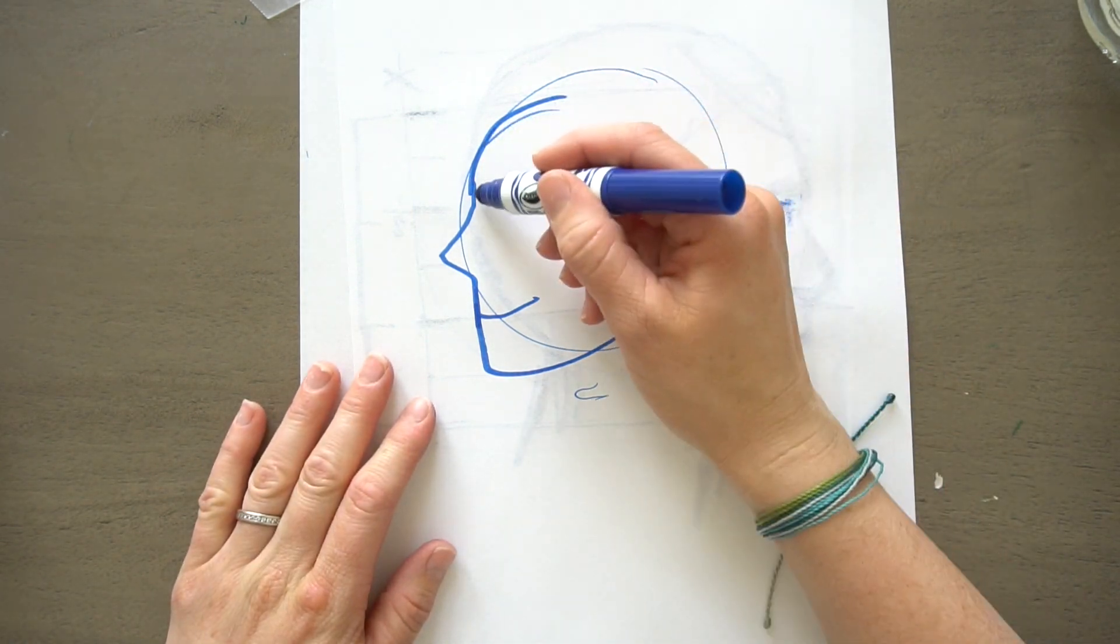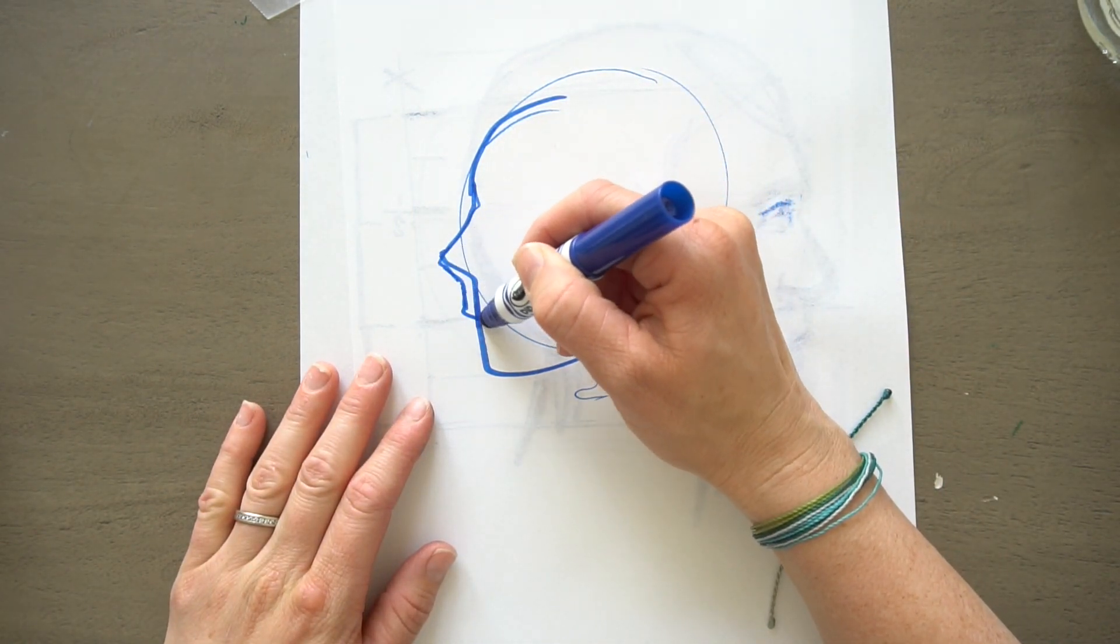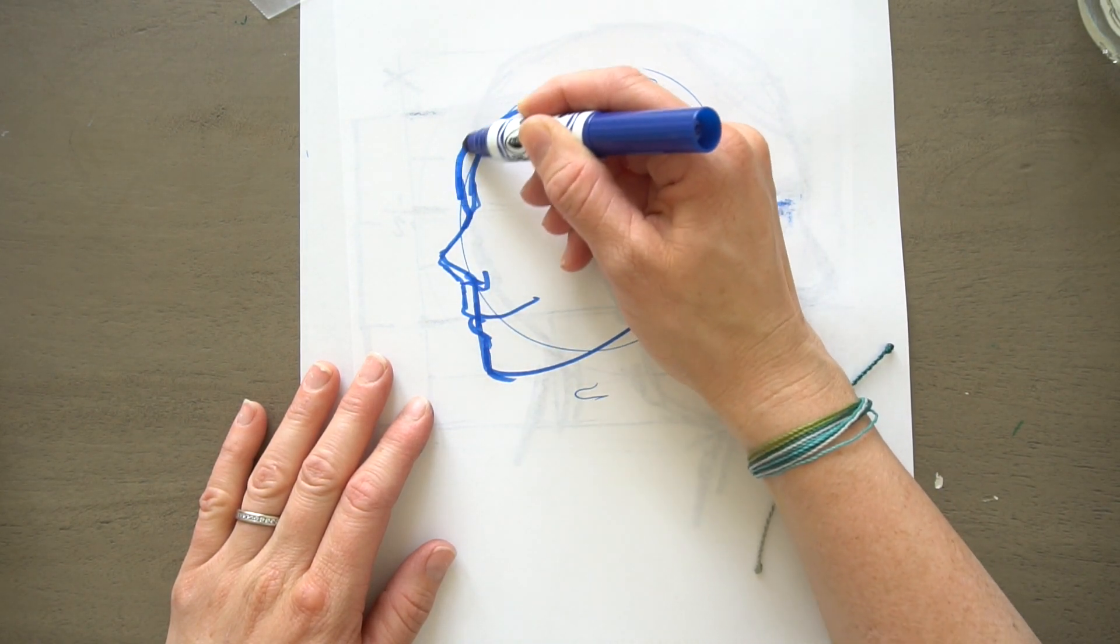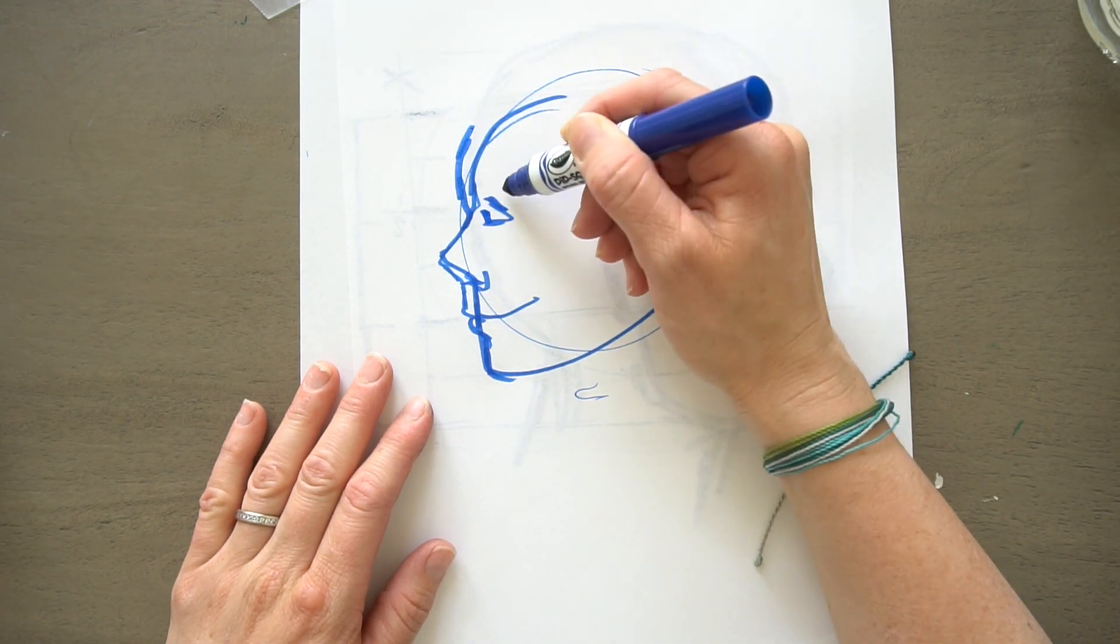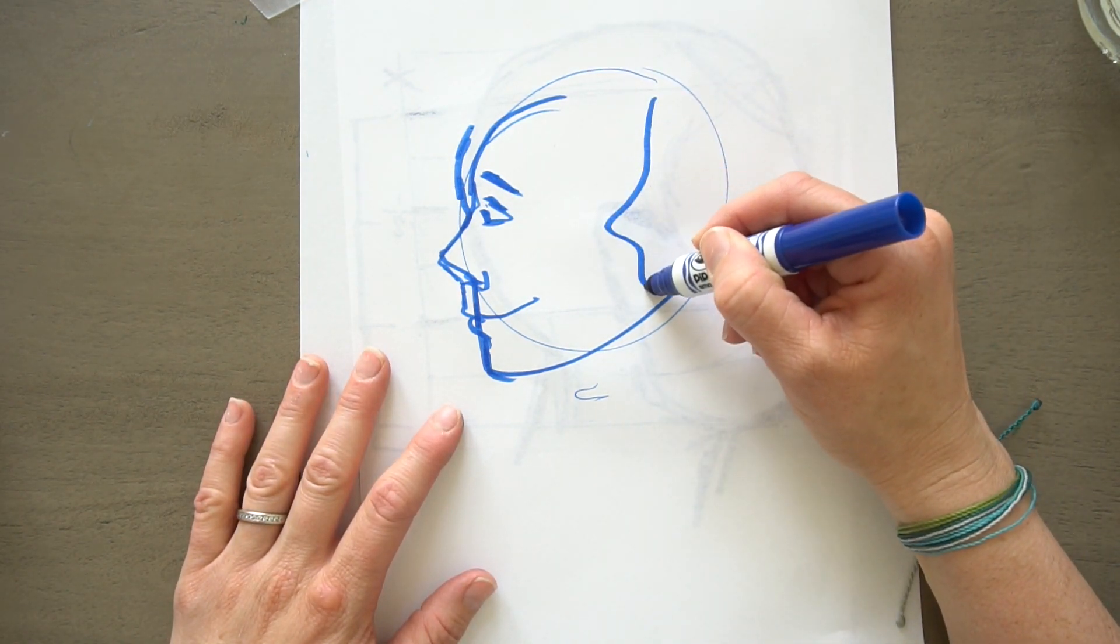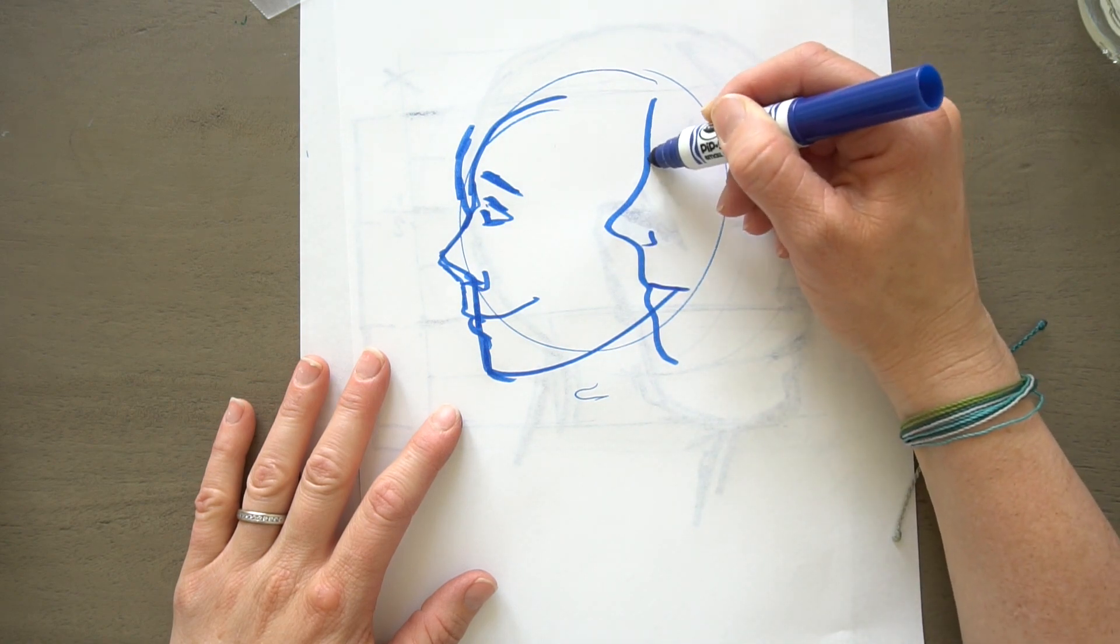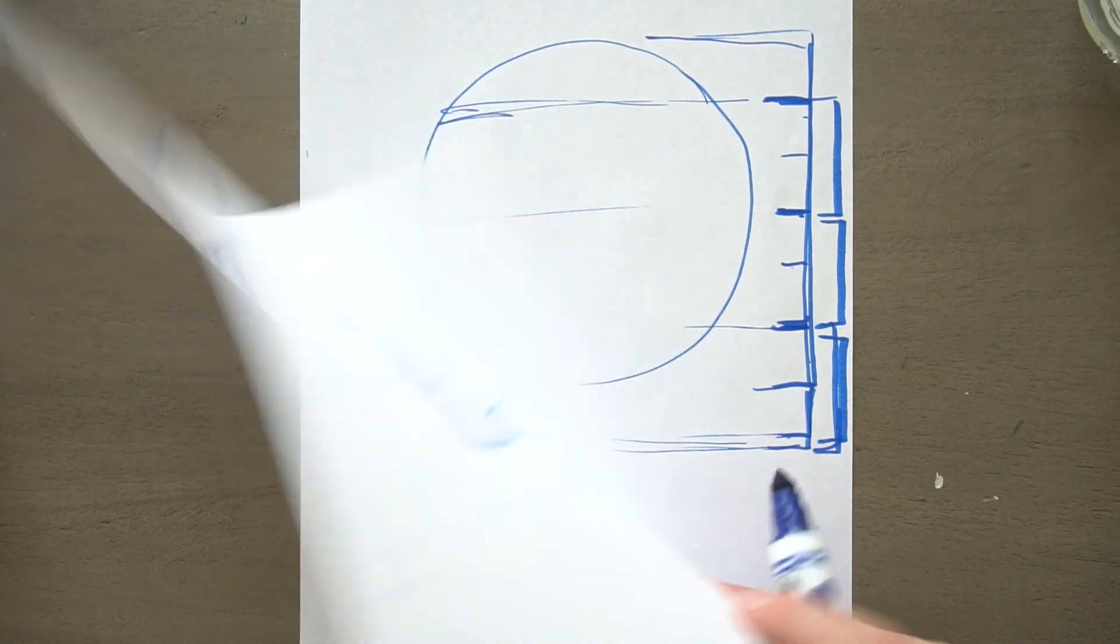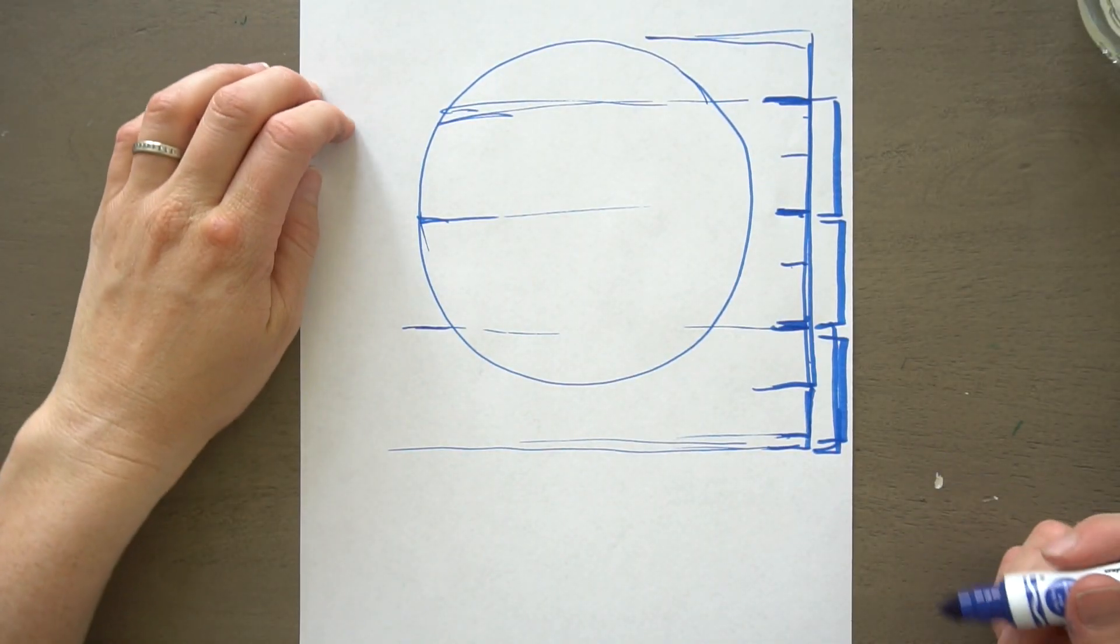But what really happens is like the mouth kind of comes out, things kind of dip in, and the eyes are kind of back in here. They're not right at the edge. So like if this was the profile, the eyes aren't like right there. All right, let's keep drawing.